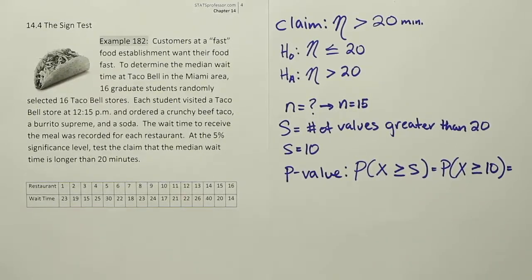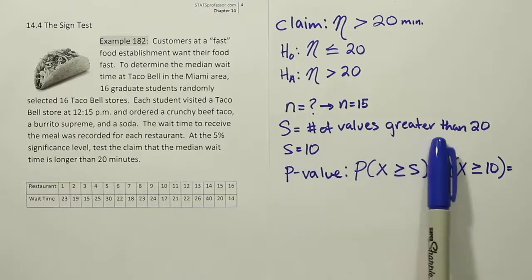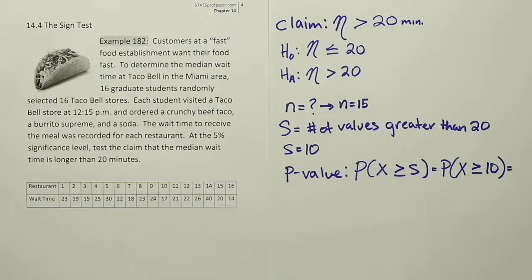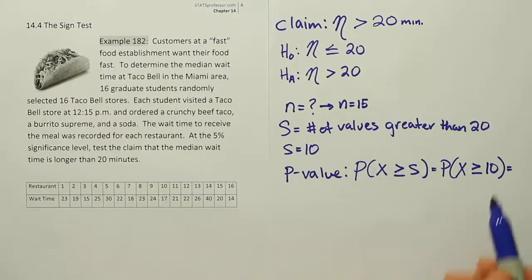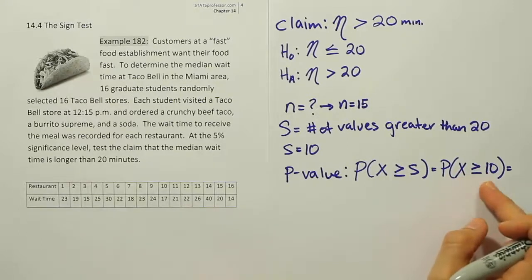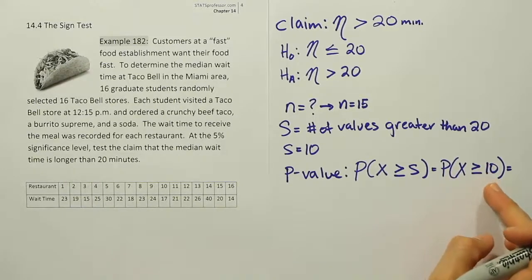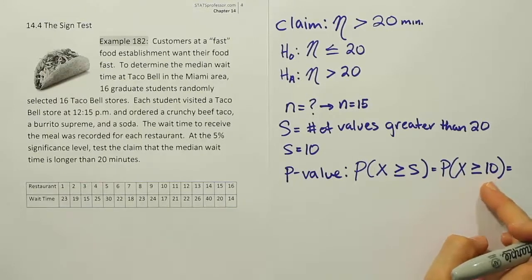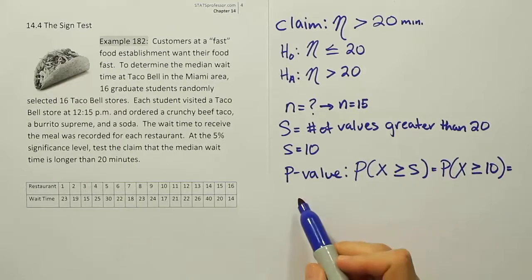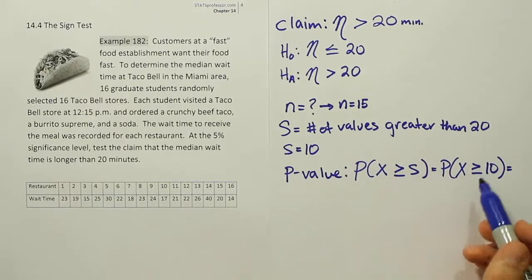To work this out, we can use the binomial formula, software, or the binomial table. The binomial table works as long as the sample size is on the table. However, the table doesn't compute 'at least' type probabilities directly — it can't give you P(X ≥ 10) directly. This answer would require summing probabilities for x = 10, 11, 12, 13, 14, and 15. The table only gives cumulative probabilities from a given number downward, so we need to rewrite this as an equivalent expression.